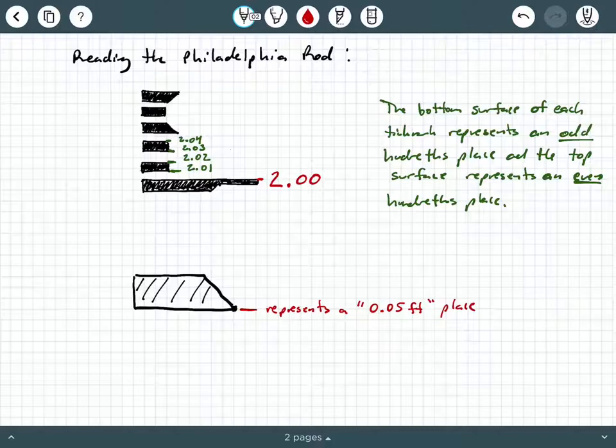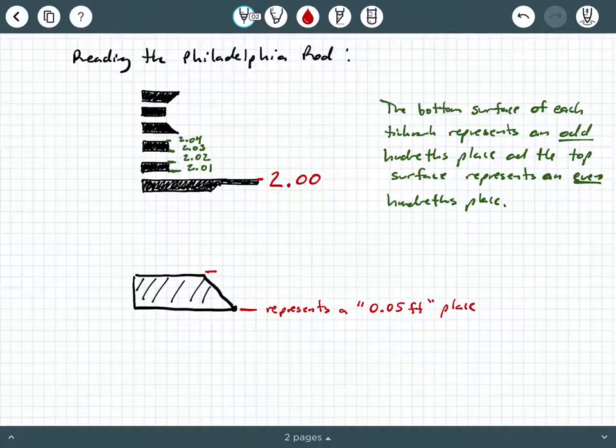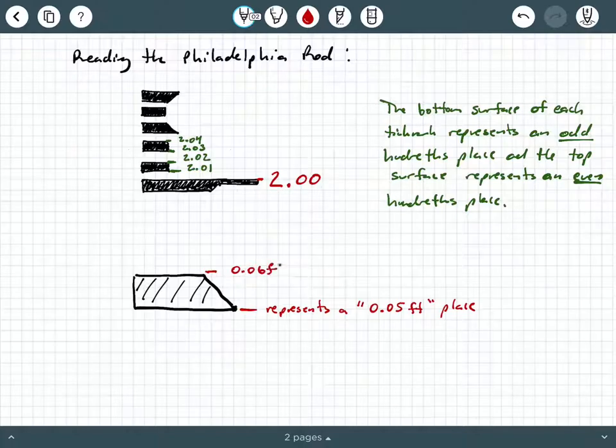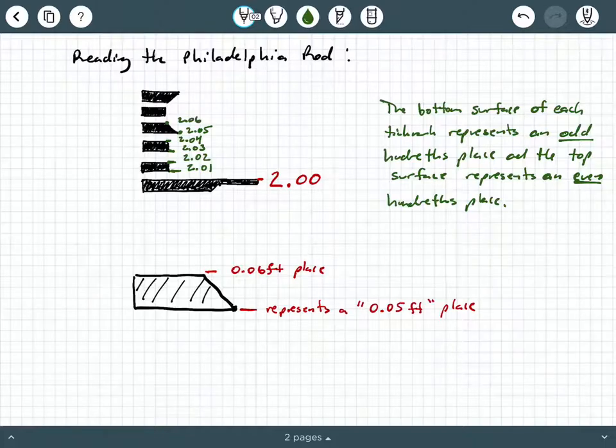And the reason why it's shaped a little bit differently, the reason why it's not just a regular rectangle, is so you can spot that more easily when you're looking through the scope. So that's the 0.05 foot place. Moving on up, the top surface of this is, of course, the 0.06 foot place. So back to our figure here, this point right here is 2.05 feet, and then this point right here is 2.06 feet.